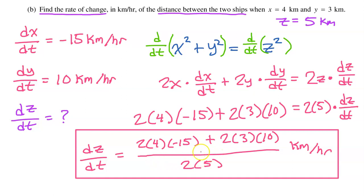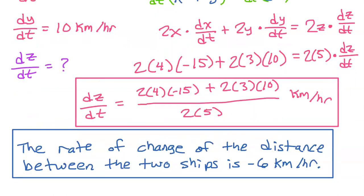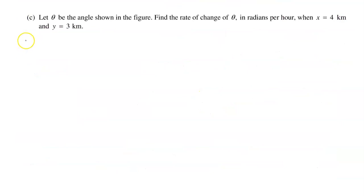Let's go ahead and simplify. On the AP exam, you should pretty much always write your answers as a complete sentence. The rate of change of the distance between the two ships is negative 6 kilometers per hour.